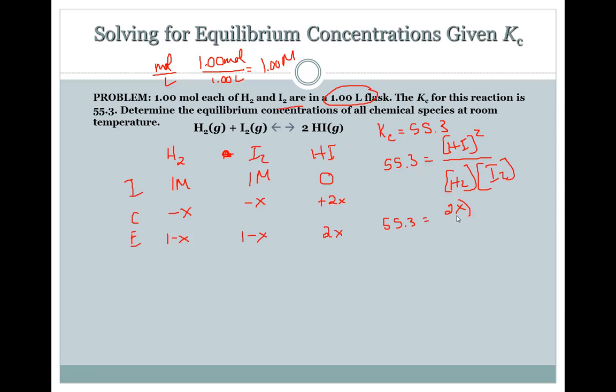One mole of each of H2 and I2 are in a one liter flask. Once again, molarity would be moles over liters, so that means 1.00 moles over 1.00 liters. Let's start off the ICE box. I, C, E. Initially, we have one molar of H2, one molar of I2, and we don't have any of the HI.